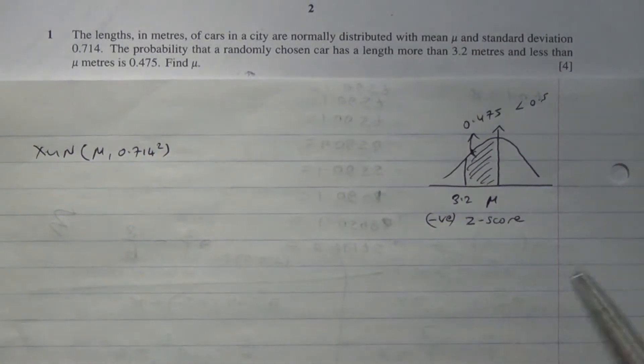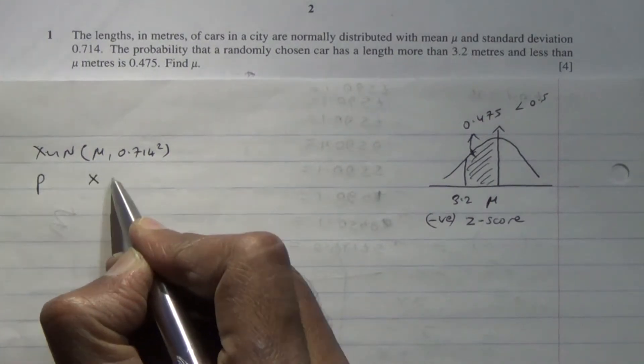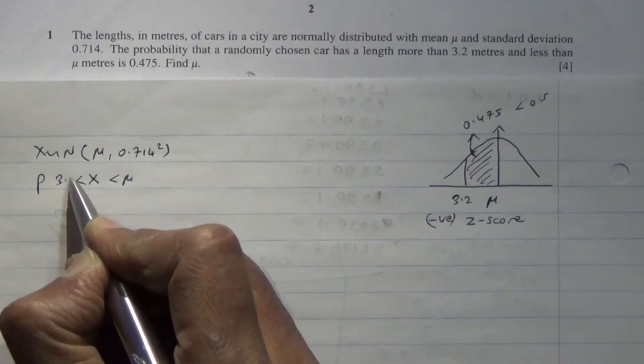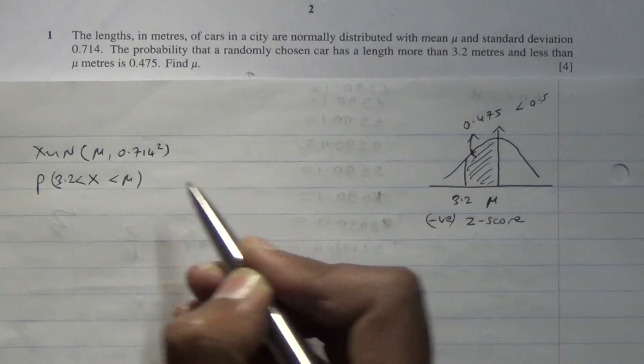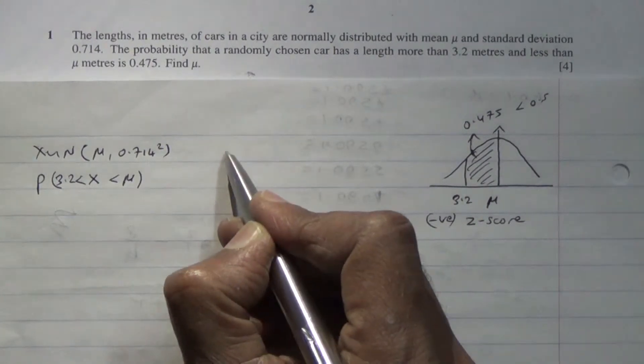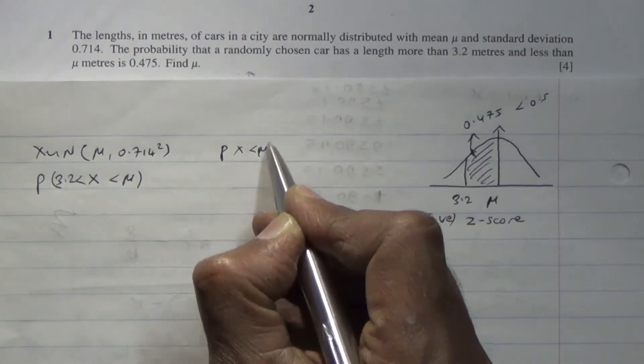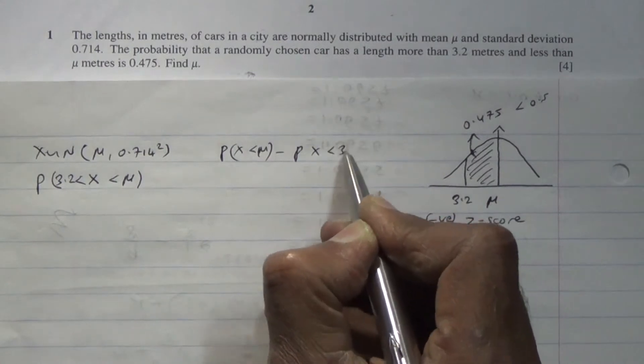So if this is the case, we're going to say probability of x being less than mu and of course being less than 3.2. So what this means is that you are basically saying that this is probability of x being less than mu minus the probability of x being less than 3.2.